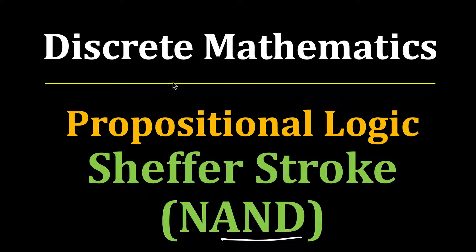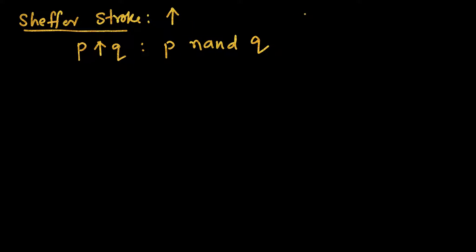In this video we will study another logical operator called the Sheffer Stroke, also called NAND. NAND means 'not of AND'. We have already seen the AND operator — AND means p AND q is true when both p and q are true. This is the symbol for the Sheffer Stroke, and it is read as p NAND q, which is equivalent to NOT of (p AND q).